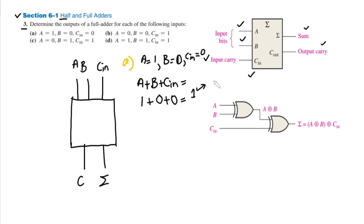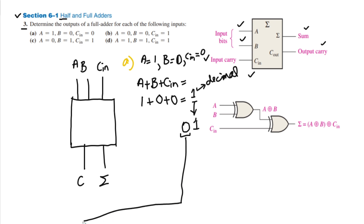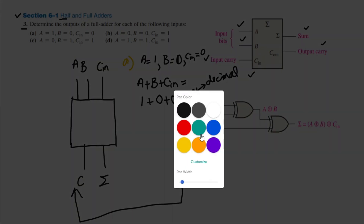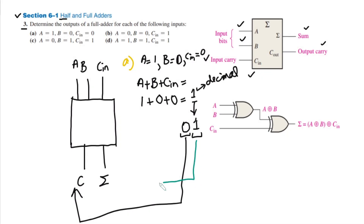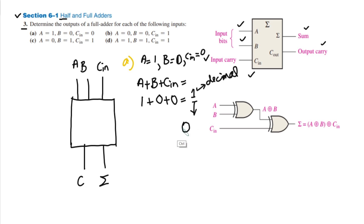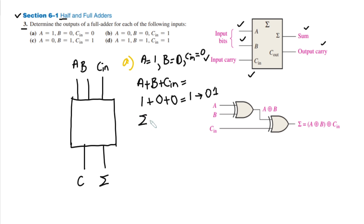The result is 1 in decimal. Converting to a 2-bit binary number, I get 0 1. The leftmost bit is the carry bit while the rightmost bit is the sum. So for inputs 1, 0, 0 we get output 0 1 — meaning the sum is 1 and the carry is 0.